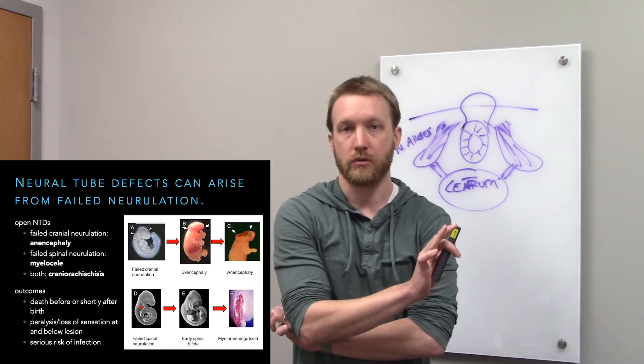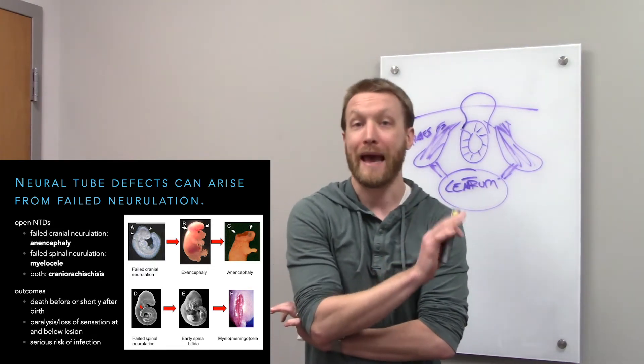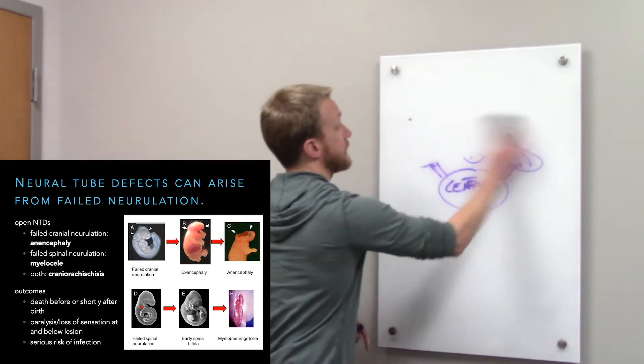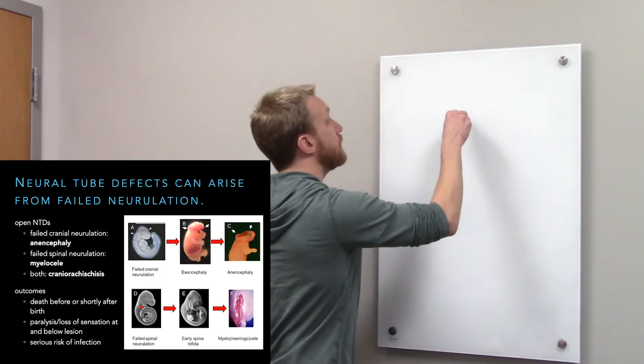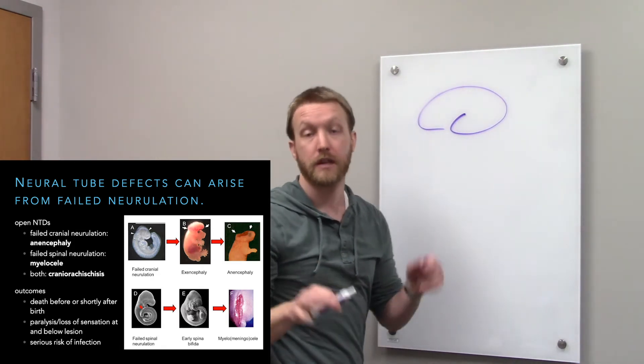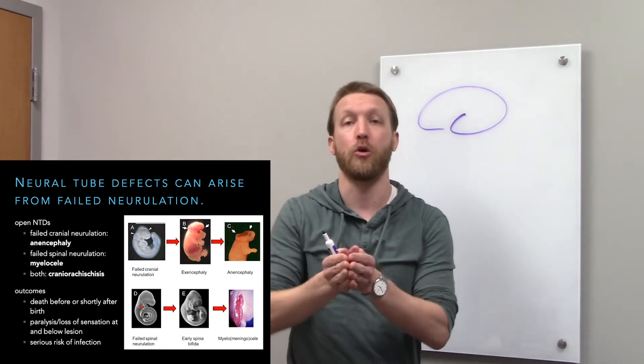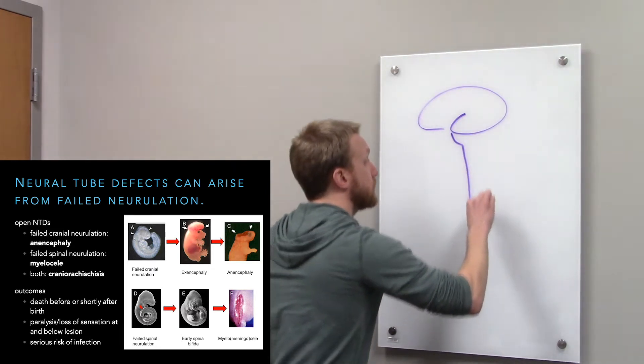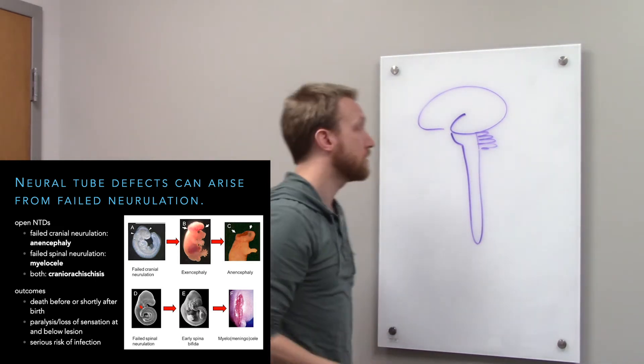Spinal cord defects are more survivable, but certainly they come with their own set of problems. Paralysis, sensory loss, at and below the level of the lesion. If it's an open neural tube defect, the other problem is risk of infection because we're exposing neurons to air. We've got to fix this. This is an emergency. It must be fixed if we're going to survive it. We've got to repair the open neural tube defect. Remember, spinal cord is a relay between the brain and the body. So why do we get at and below the level of lesion? Let's say we have a defect here.